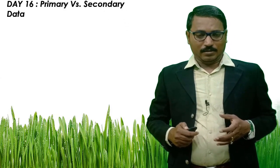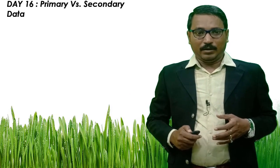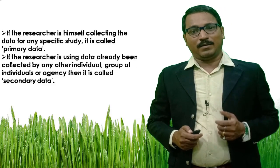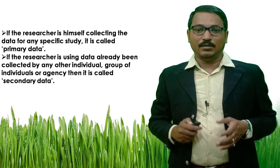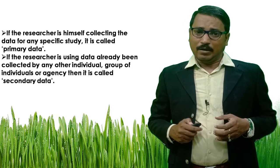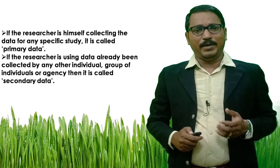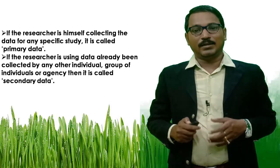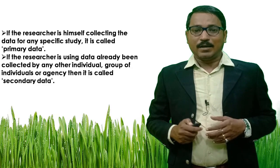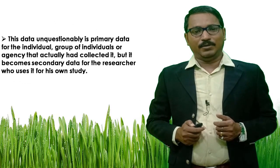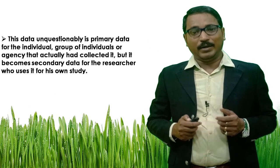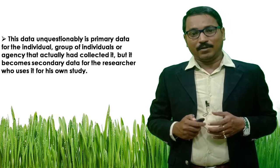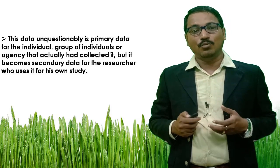Let us understand primary and secondary data in a more elaborative way. If the researcher is himself collecting the data for any specific study, it is called primary data. If the researcher is using data already collected by any other individual, group of individuals, or agency, then it is called secondary data. This data is unquestionably primary for whoever originally collected it, but it becomes secondary data for the researcher who uses it for his own study.